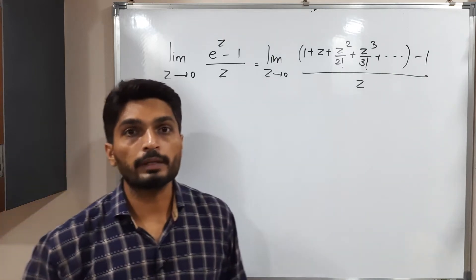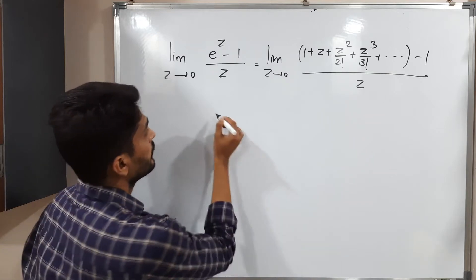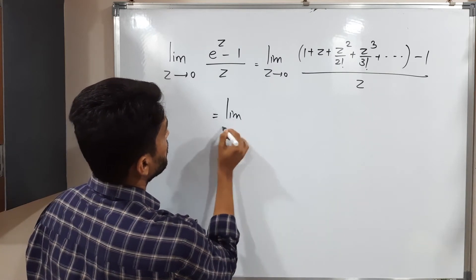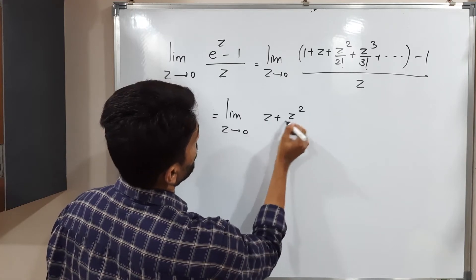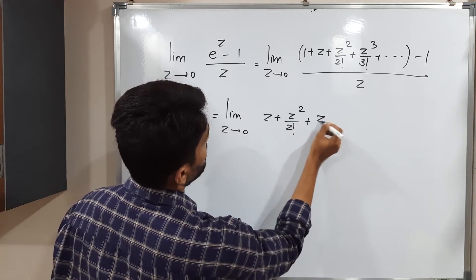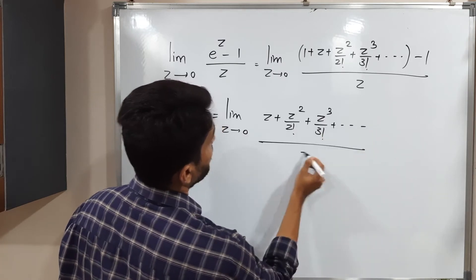So if you solve the bracket what will happen? This 1 and minus 1 will get cancelled to each other. So this is equal to limit z tends to zero z plus z square by 2 factorial plus z cube by 3 factorial plus and so on divided by z.